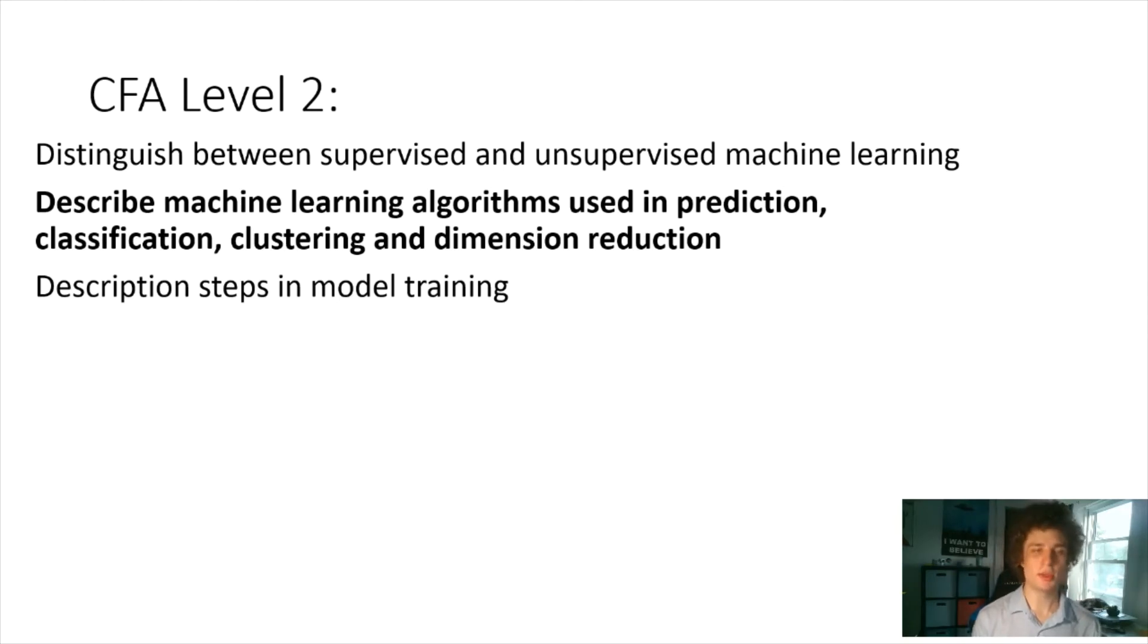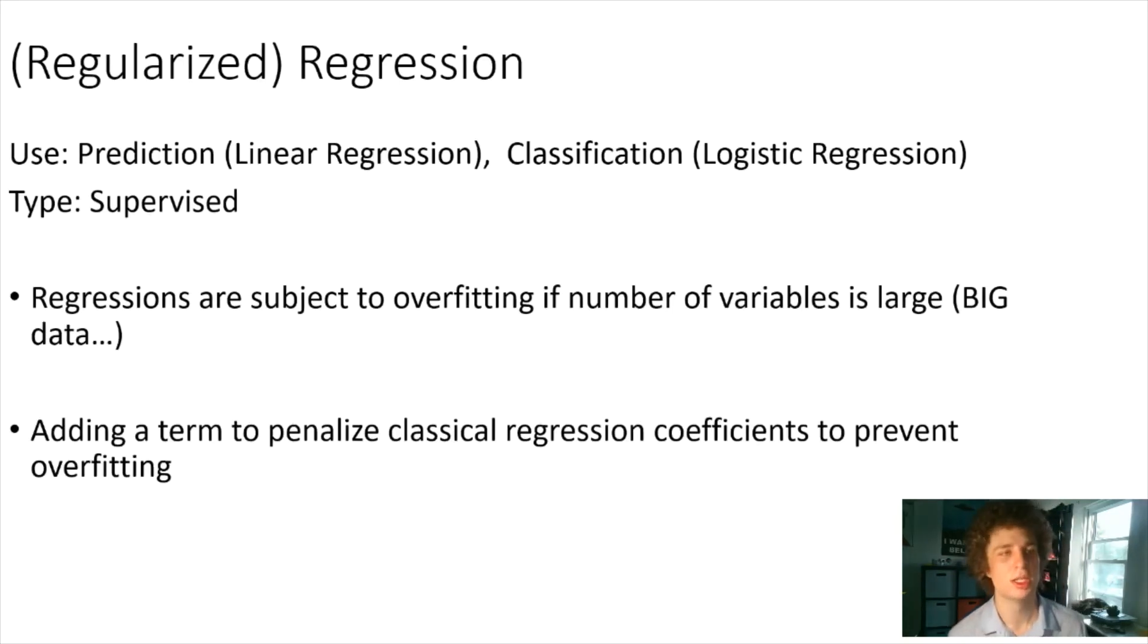We'll talk about common machine learning algorithms used in prediction, classification, clustering, and dimension reduction. First is regression. Regression is used for prediction, as you would know from linear regression, and also for classification in the case of logistic regression. These are both supervised methods. I'm not going too much into these because I'm assuming most people have some grasp of regression.